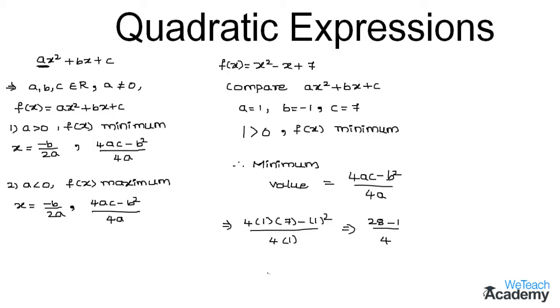28 - 1 would be 27 divided by 4. Now let us find the value of x, which is -b/2a. By substituting the values of b and a, we get: